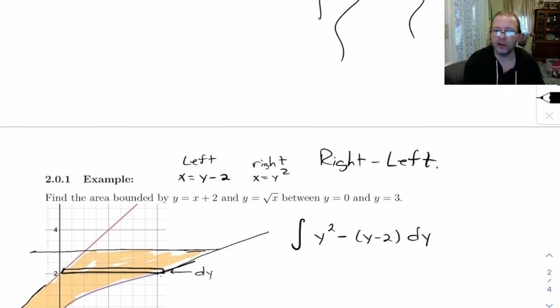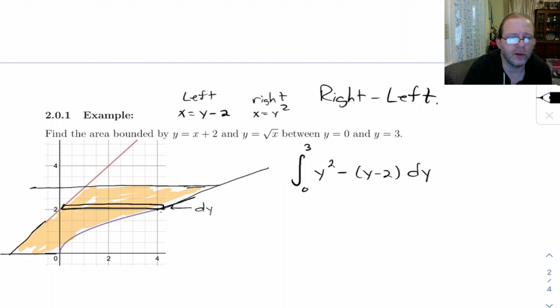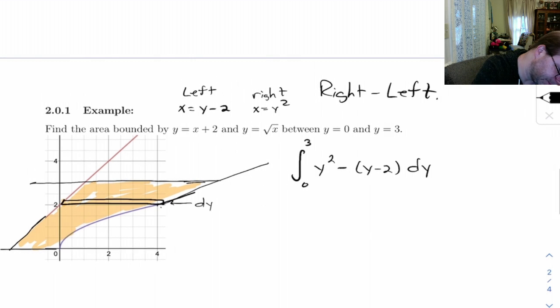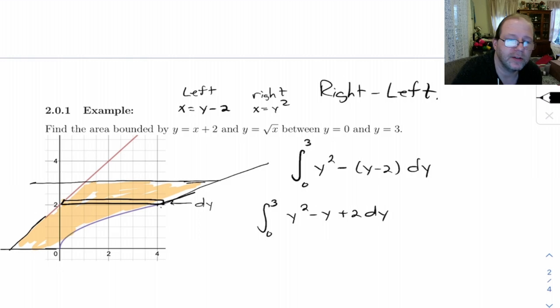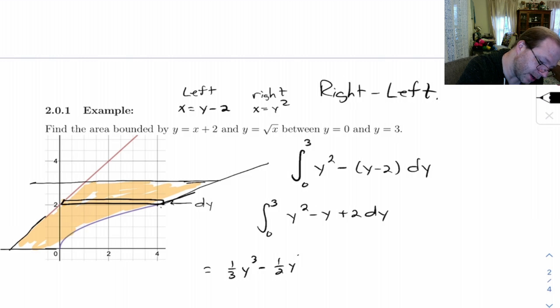And our endpoints for this thing are from 0 to 3. So, now, I just need to work this integral out. I'm going to distribute that negative to begin with. And after I do that, let's see, we get 1 third y cubed minus 1 half y squared plus 2y, 0 to 3.